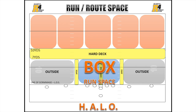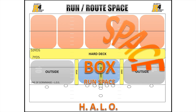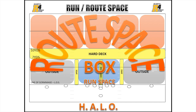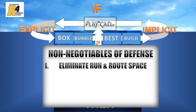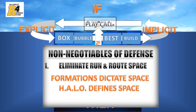Once the HALO has been overlaid onto the formation, run space in the box and route space in the tubes can clearly be defined for the offense. With a clear definition, we can better communicate and understand the intent of space that the defense is in position to cap. The first non-negotiable of defense — as well as their highest priority — is to eliminate immediate run and route space threats. Open run space is the easiest way to move the ball, which is why we use the box as the first segment of the B4 game planning bridge. Formations dictate run and route space, but the HALO defines it. The clear frames of reference that the HALO provides gives the coach and his players the competitive advantage they need to see space opportunity in a whole new way.